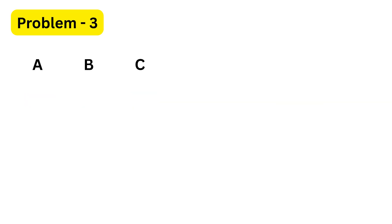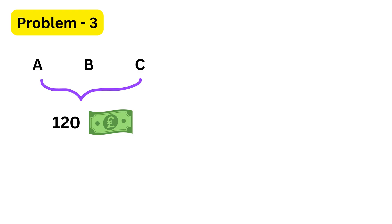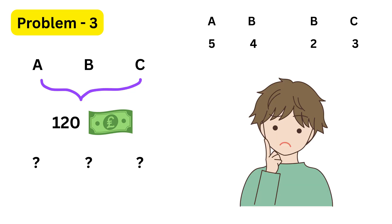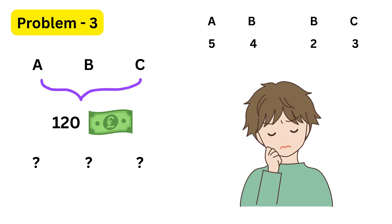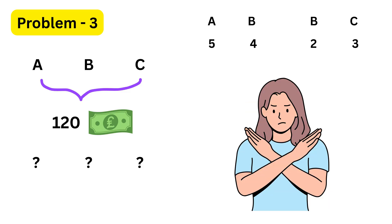Next question. We are told that A, B, and C share one hundred and twenty pounds. The ratio of the amount A gets to the amount B gets is five to four, and the ratio of the amount B gets to the amount C gets is two to three. We need to find how much each person receives. It might feel like the same type of question as before, but this time the total amount of money is fixed, and we need to calculate exact amounts for each person.